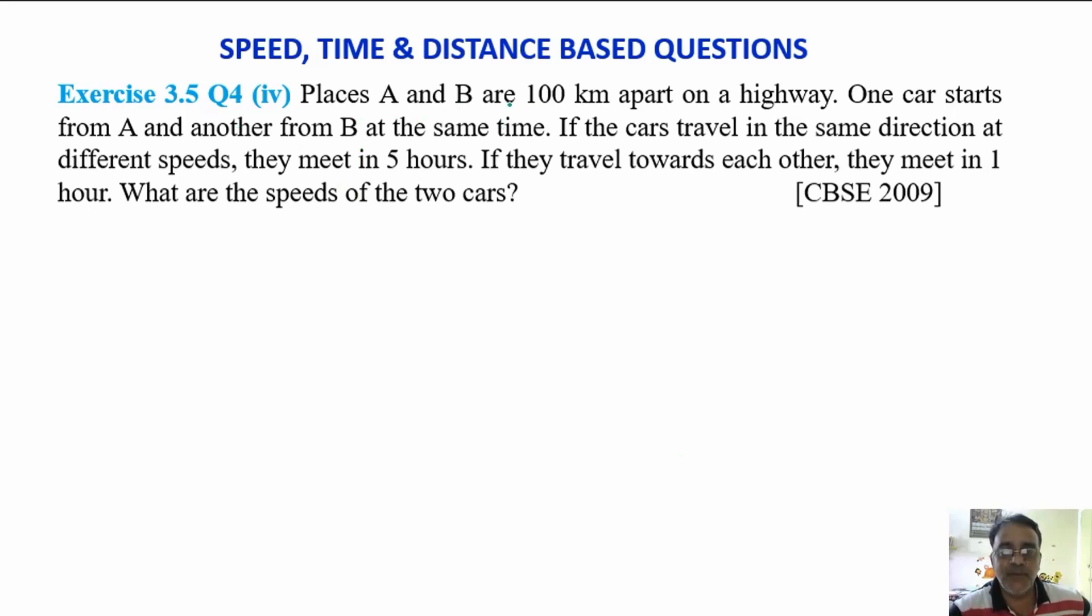Places A and B are 100 km apart on a highway. One car starts from A and another from B at the same time. If the cars travel in the same direction at different speeds, they meet in 5 hours. If they travel towards each other, they meet in 1 hour. What are the speeds of the two cars?